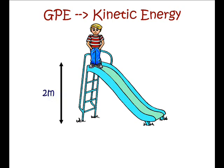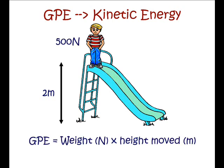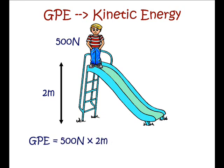He climbs up the slide, and we need to know that height. The height in this case is 2 meters. So using the equation GPE equals weight times height, we can work out that that equals 500 newtons times 2 meters, which gives us an answer of 1,000 joules. Always remember to include those units.